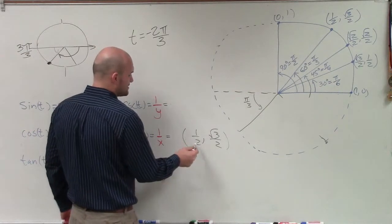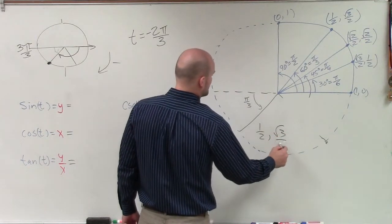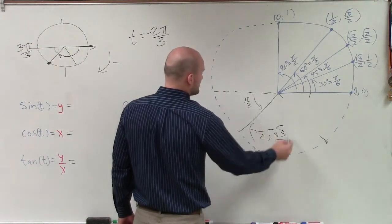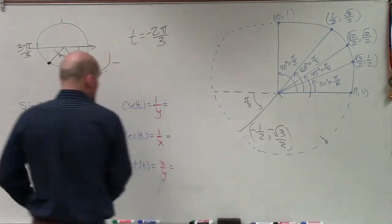I guess I should probably write this over here. 1 half, comma, square root of 3 over 2, that both of these points are going to be negative when talking about the second quadrant. So therefore, those are going to be my two coordinate points.